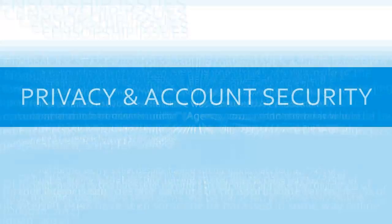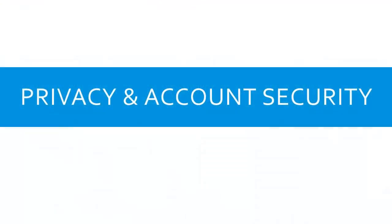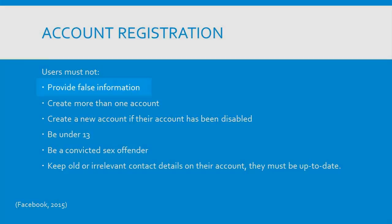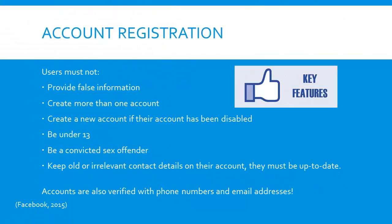Let's move on to privacy and security. Facebook has a number of terms for registration and account security. You must not provide any false information, make more than one account, or recreate an account if it is disabled. If you use Facebook, you must not be under 13, you must not be a convicted sex offender, and you must keep your contact information up to date. Facebook verifies accounts with phone numbers which must be unique, and as a result, these account terms are a key feature to ensure Facebook remains a safe environment for all users.